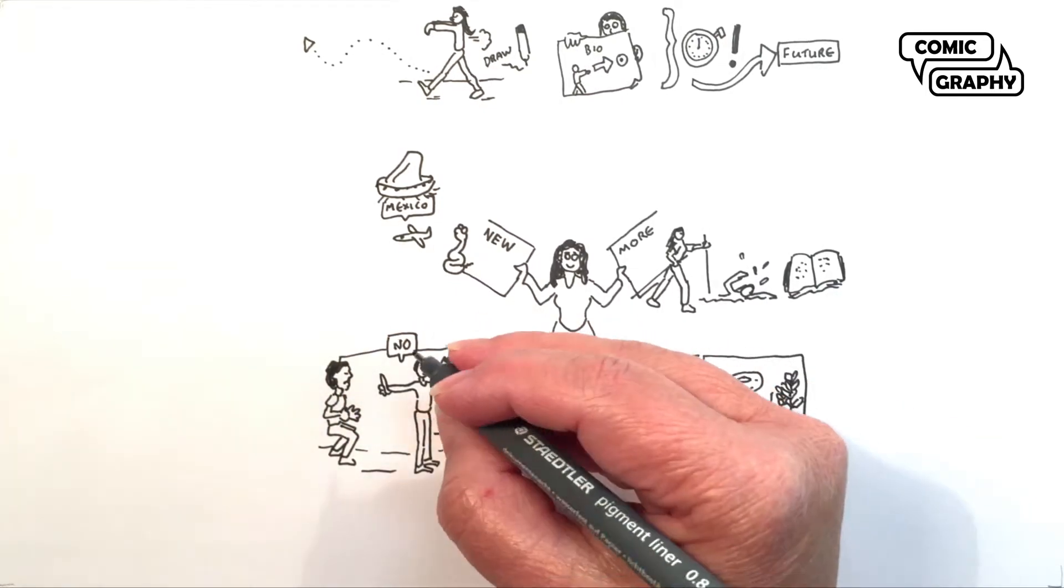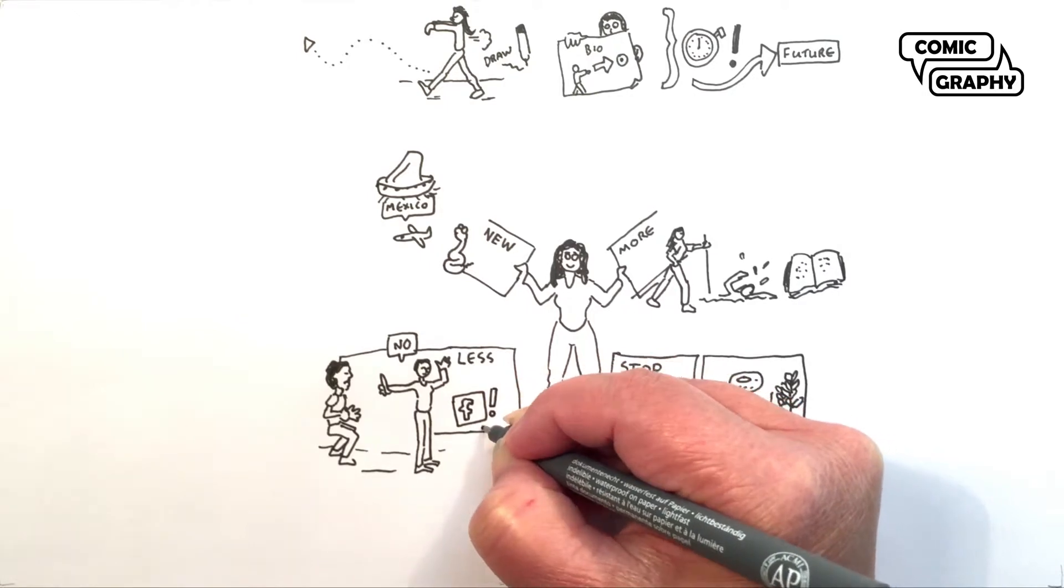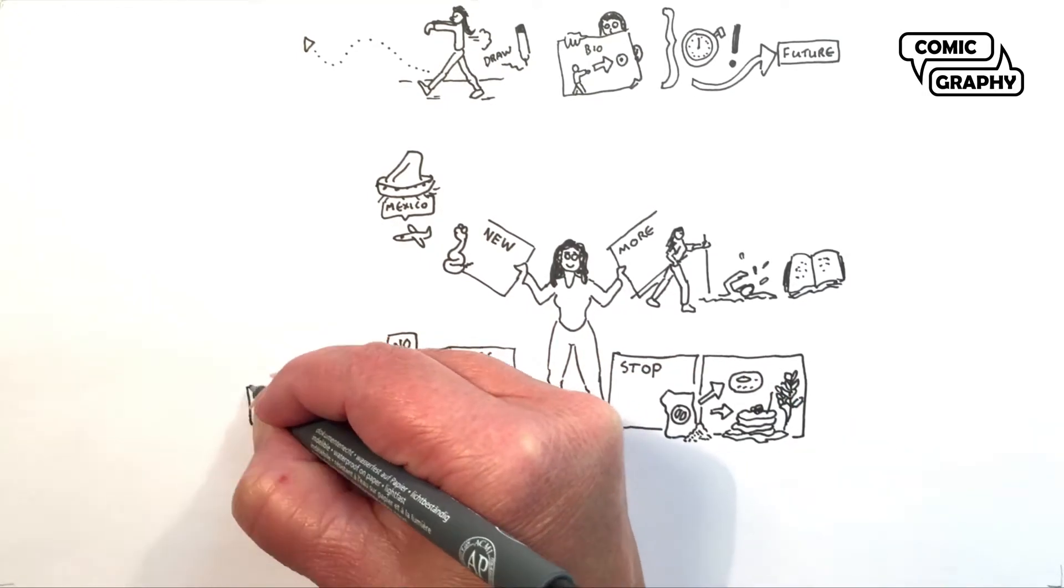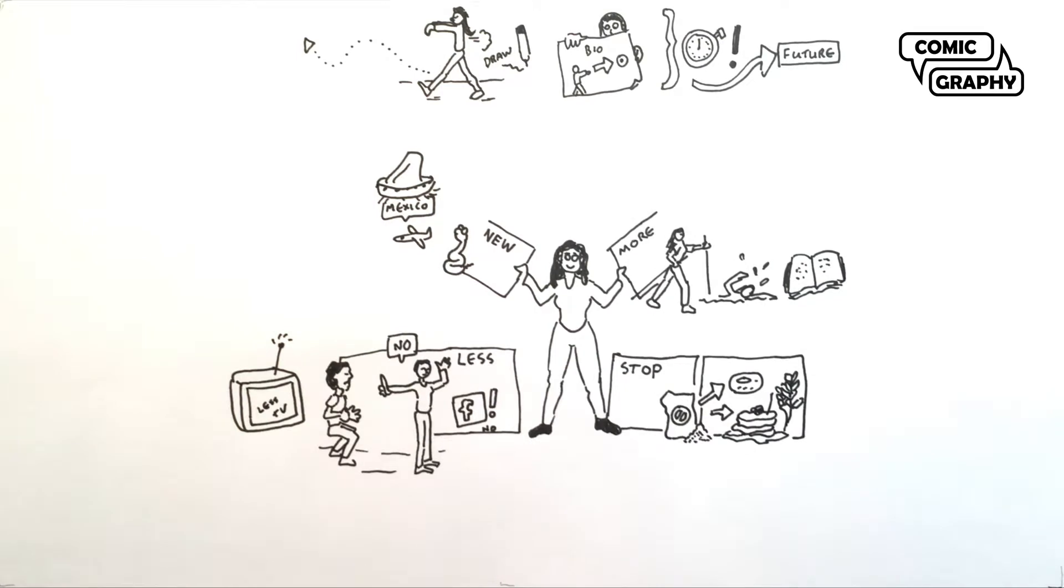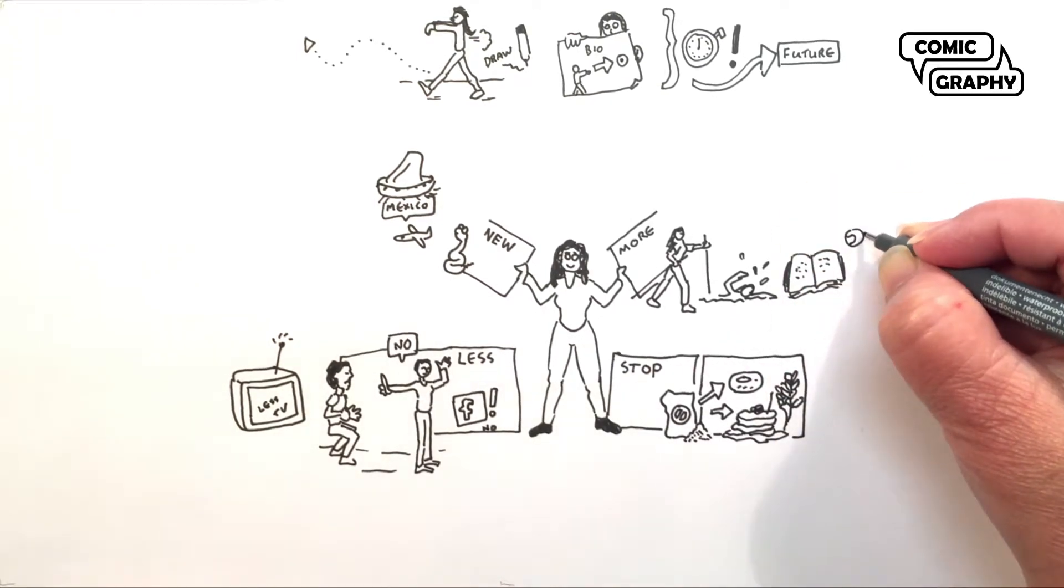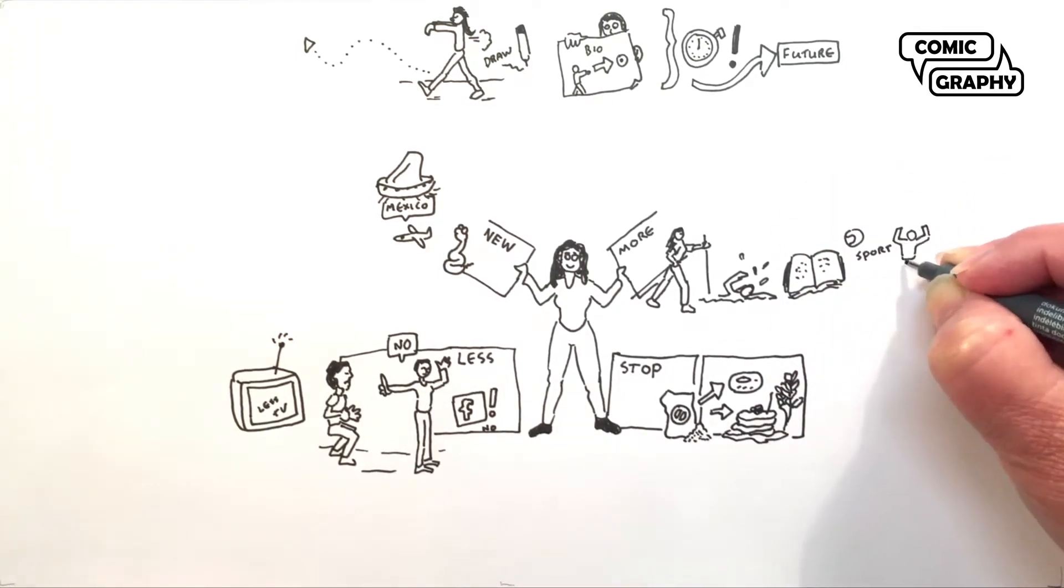Now you have, of course, different stuff. Maybe you want to watch less television, so you have more time for other things. More time for your family, for instance. More sports or stop eating junk food.